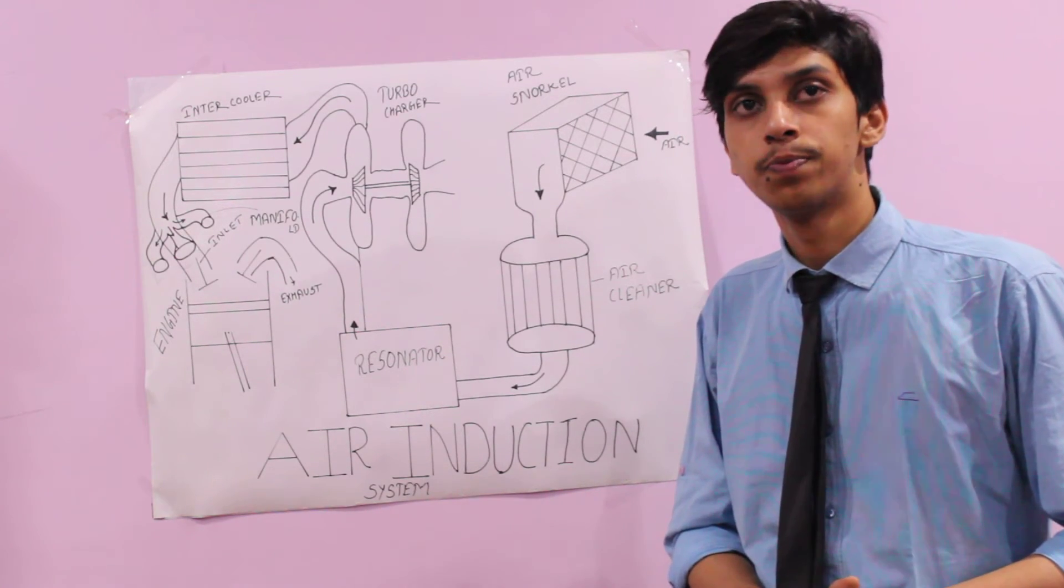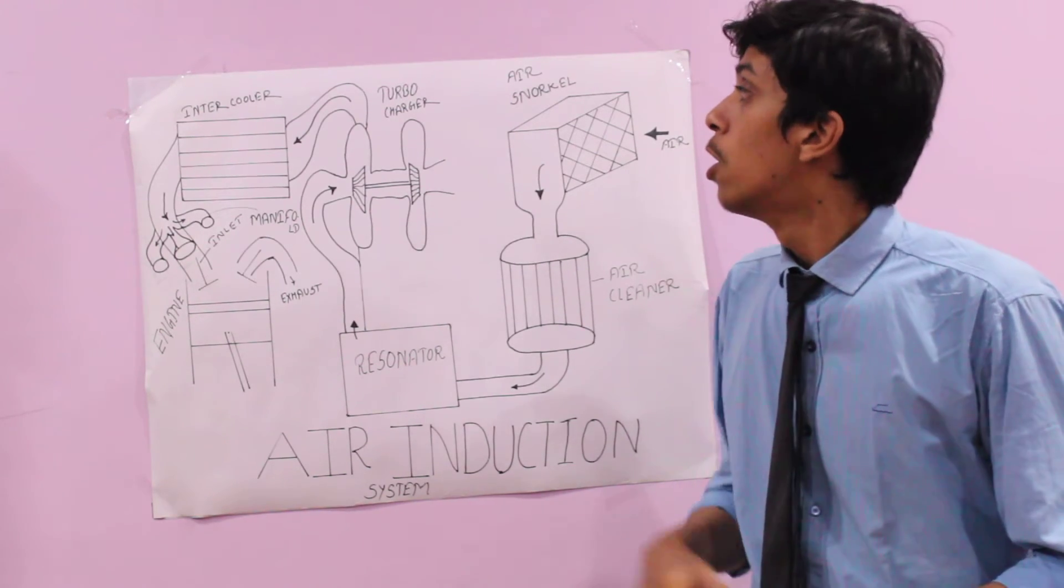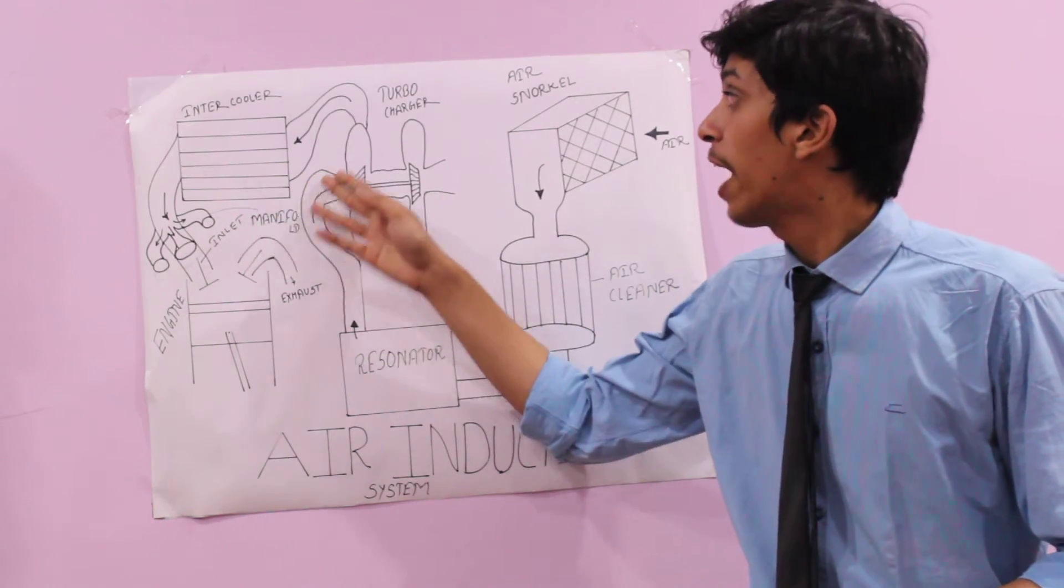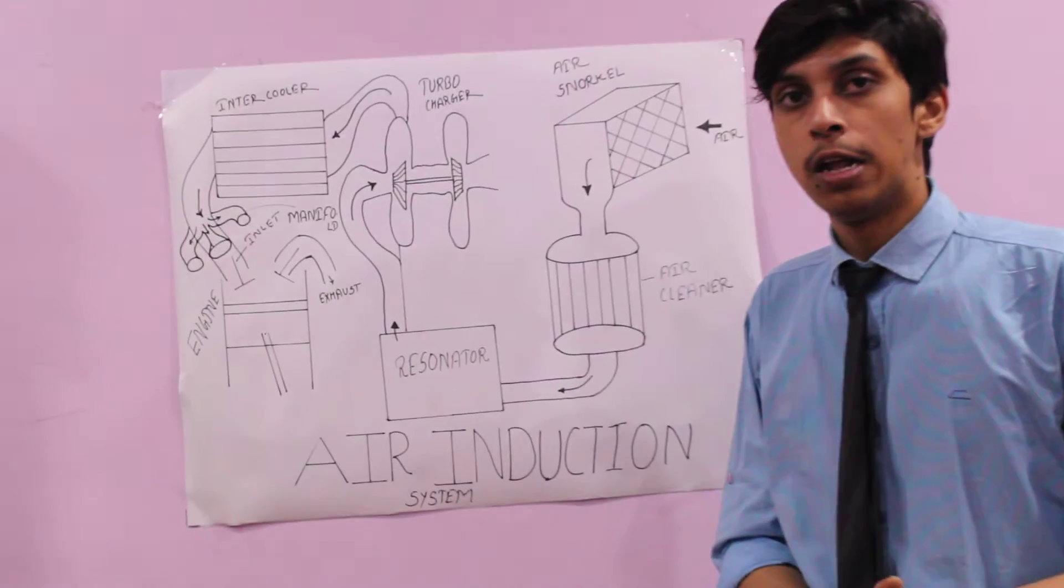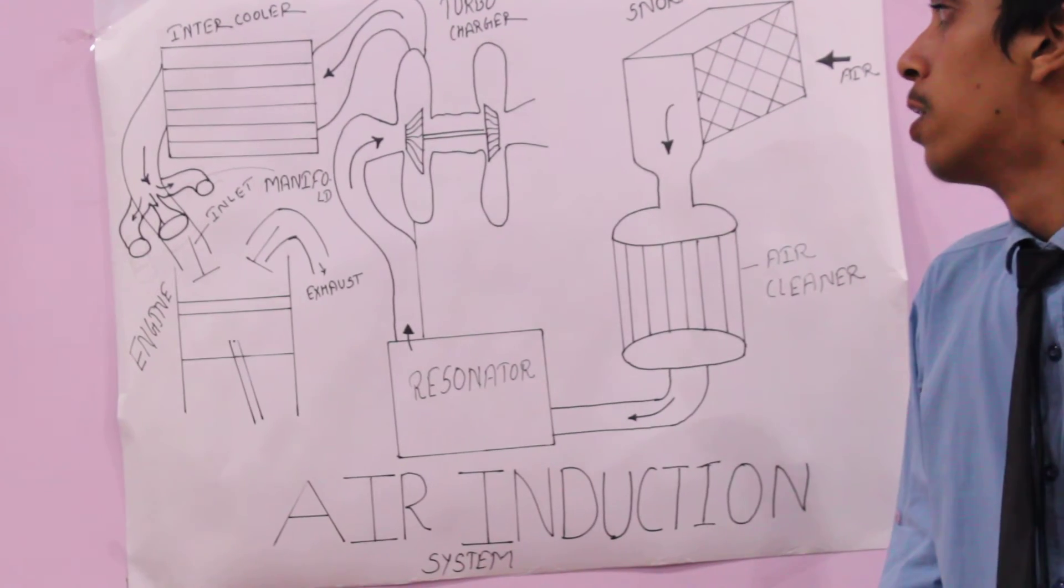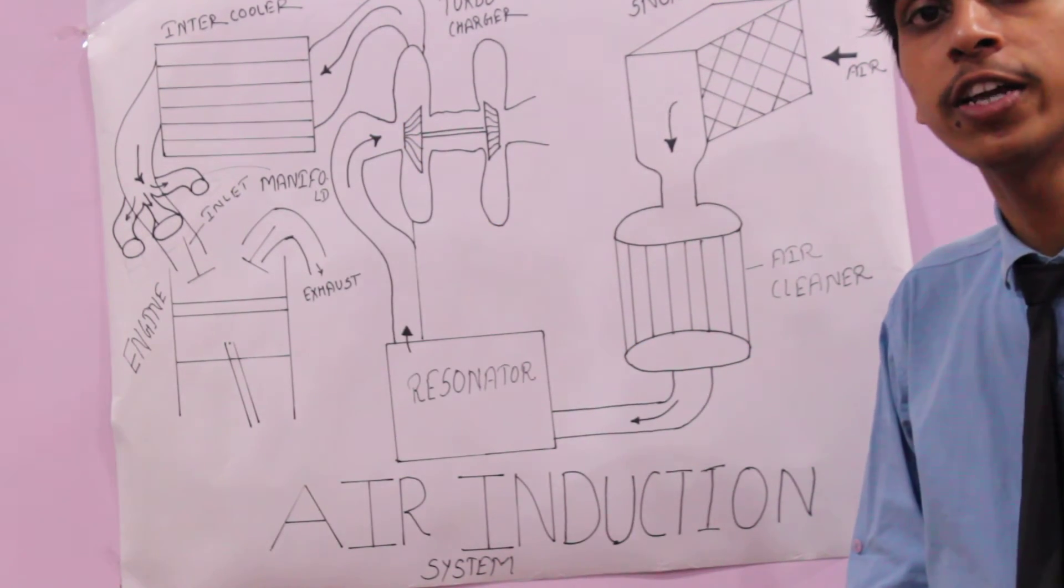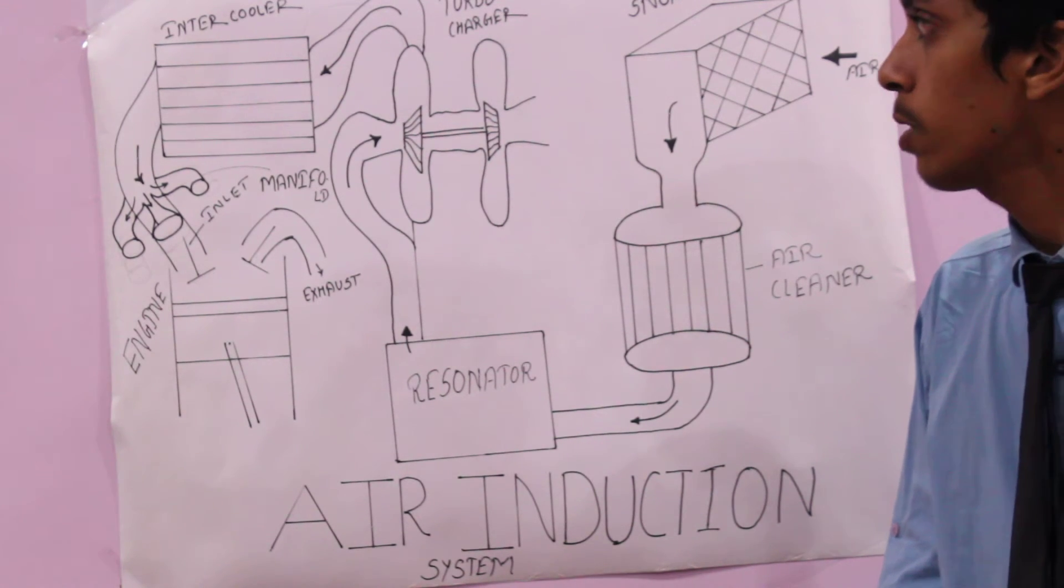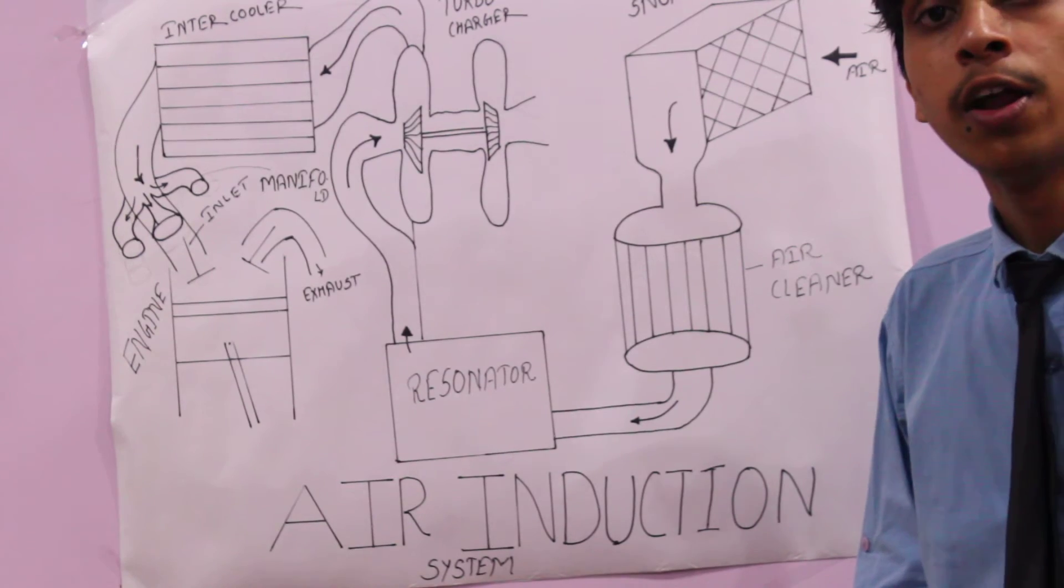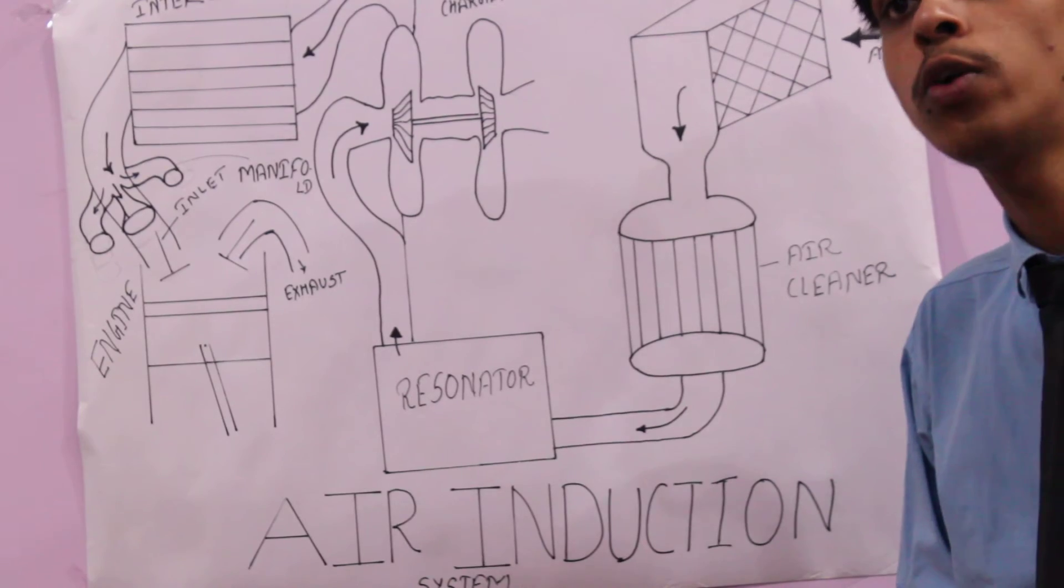So we need some cooling for that air. That's why we need the air intercooler. With the help of the intercooler, the air's temperature is reduced. You can see the intercooler in the front of the radiator in every vehicle. The high temperature air reduces its temperature to about atmospheric temperature.